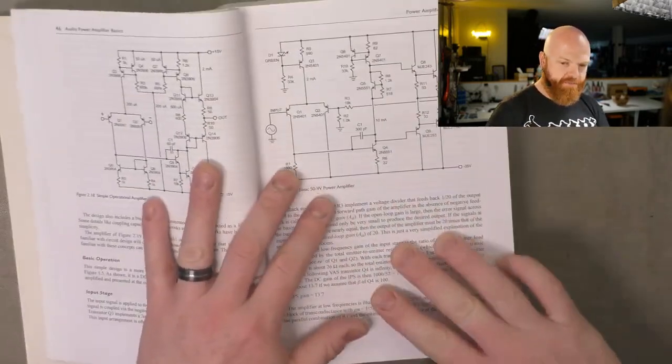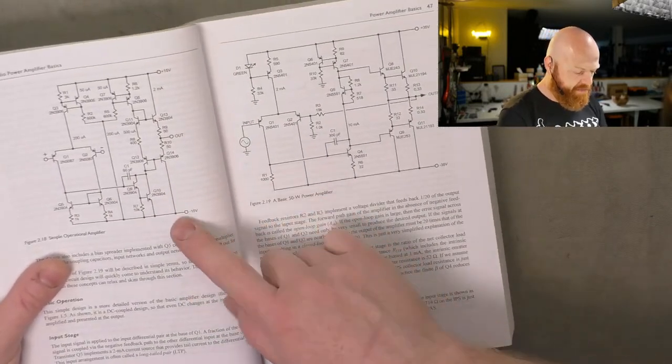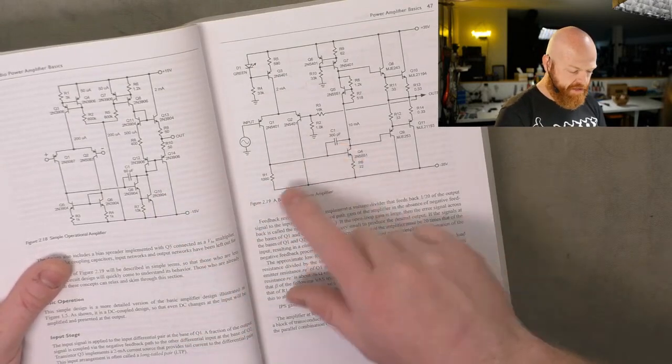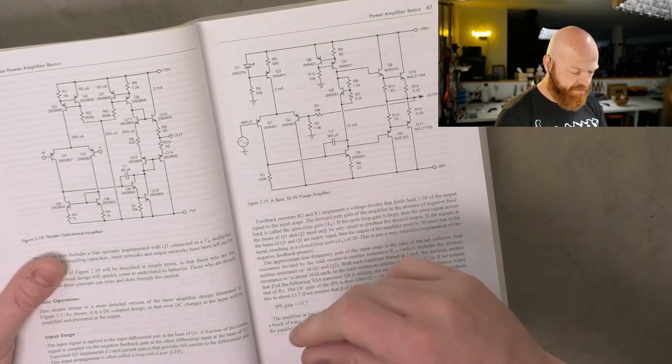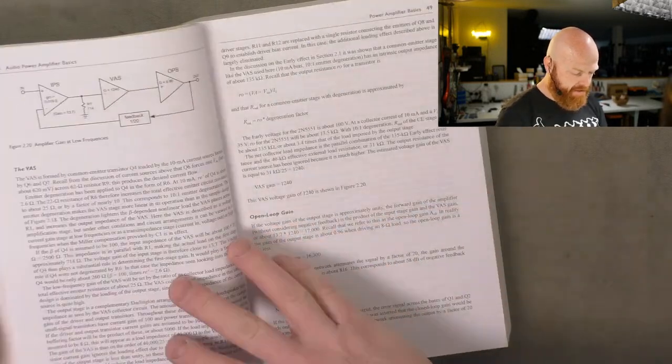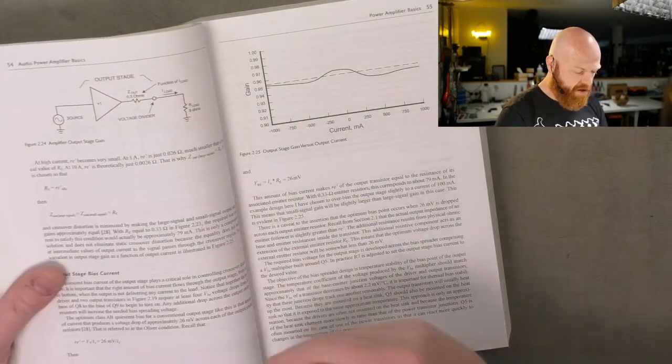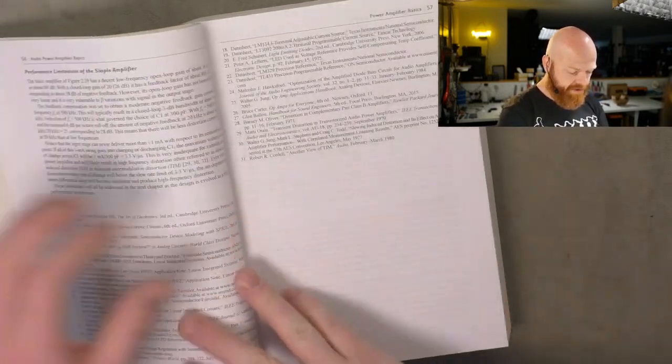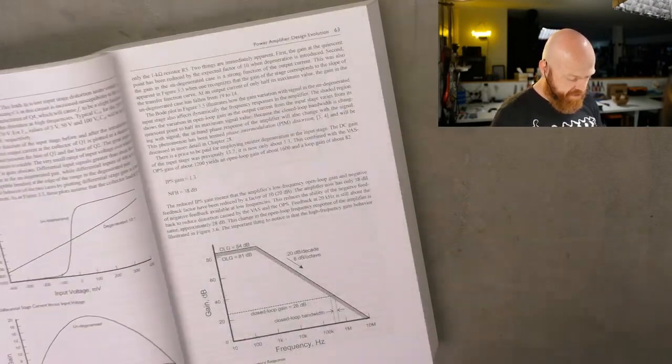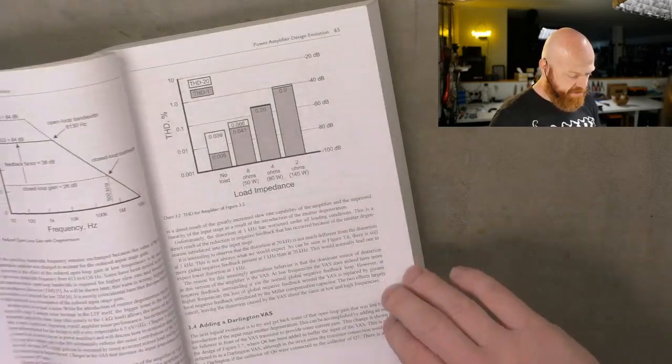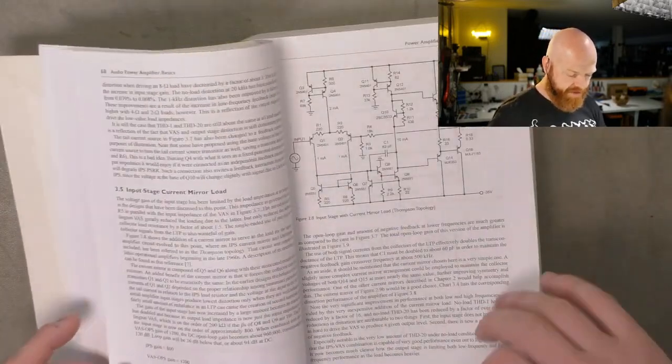So then he starts getting the basic model of an amplifier he showed early on. And he starts improving his performance piece by piece and starts making it something that you could actually have a reliable purpose for. So the amplifier sort of skeleton gets more and more complex and higher and higher performance as the chapters go on.